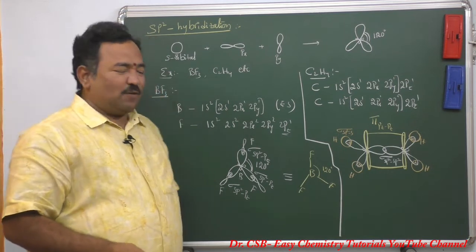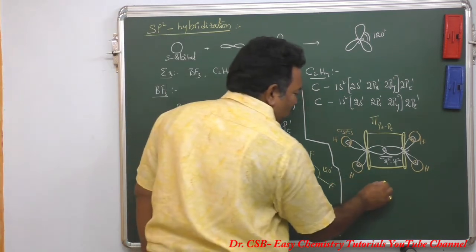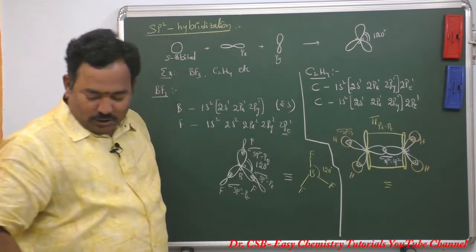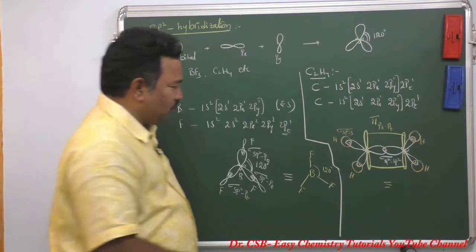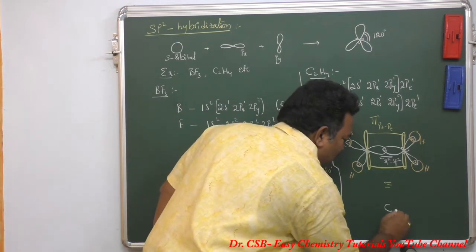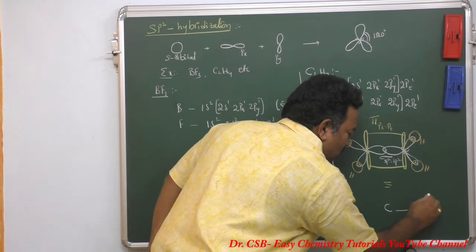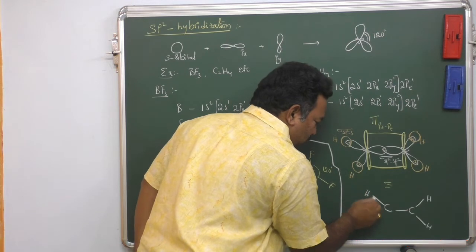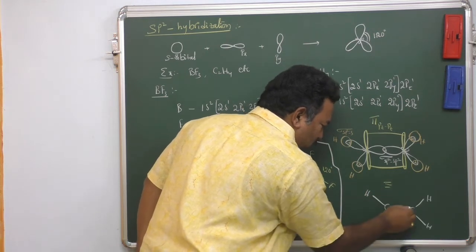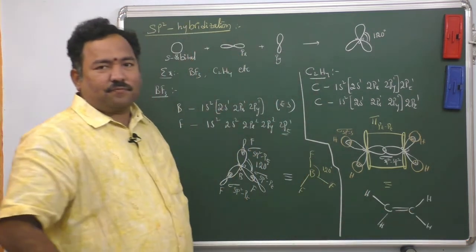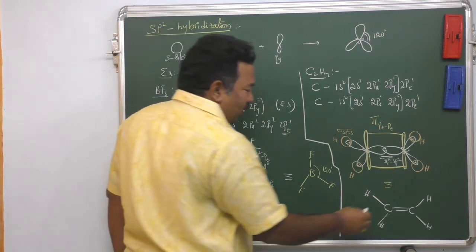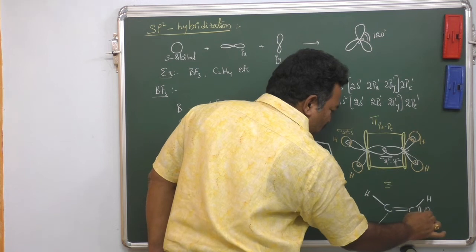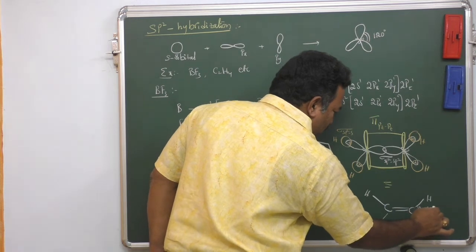Let me show this molecule. It is represented with C double bond C, with H and H on each carbon. The bond angle HCH is 120 degrees.